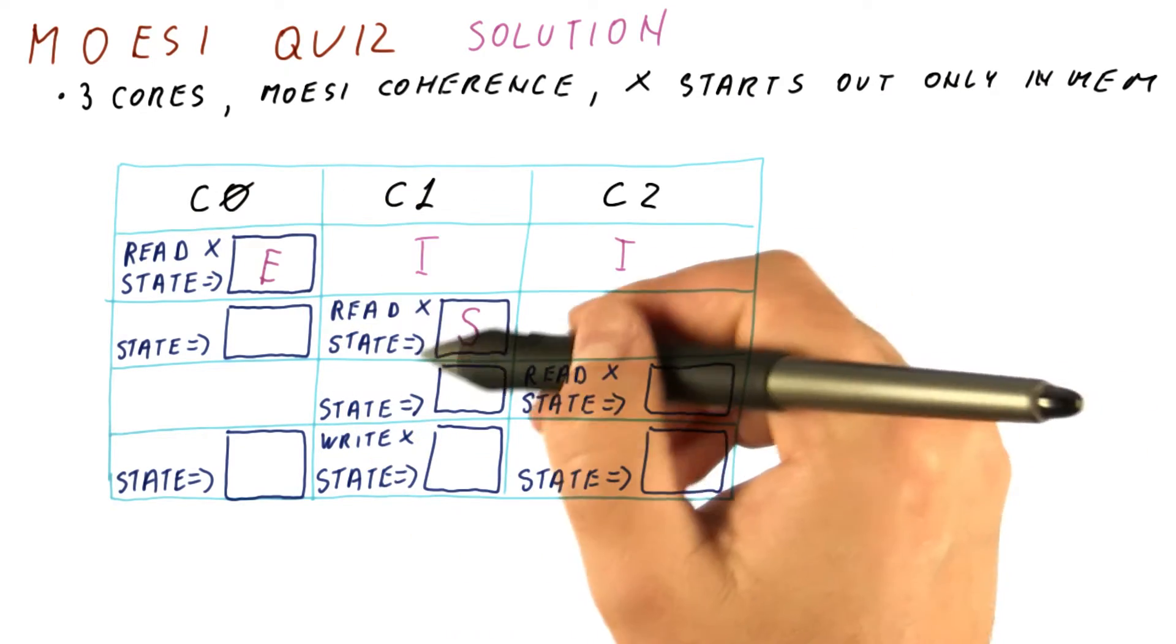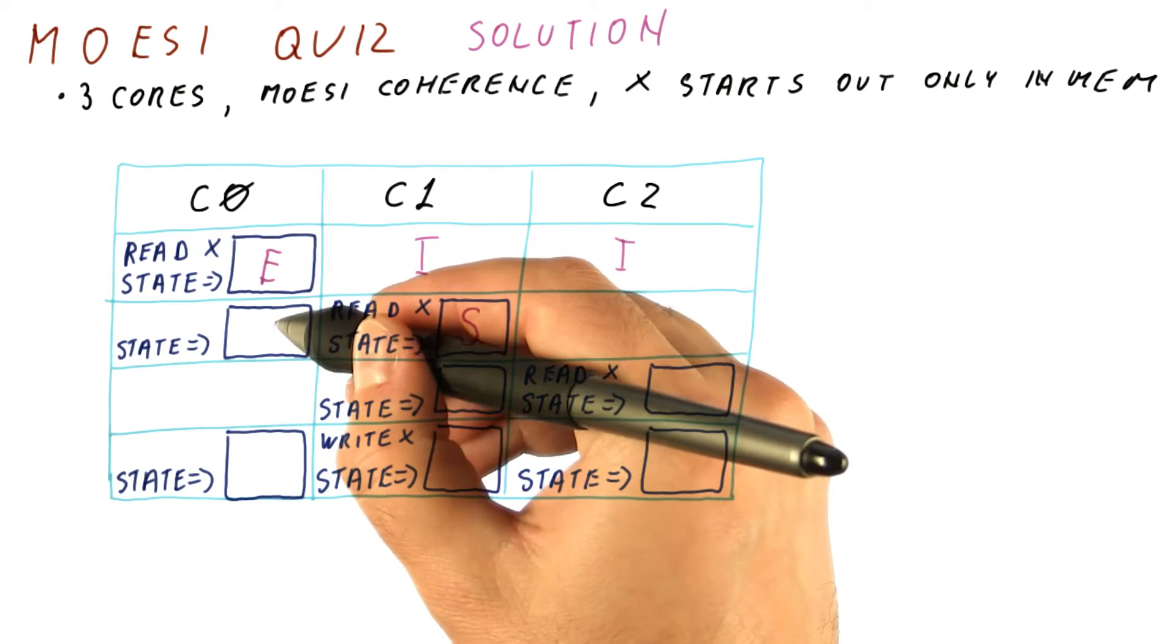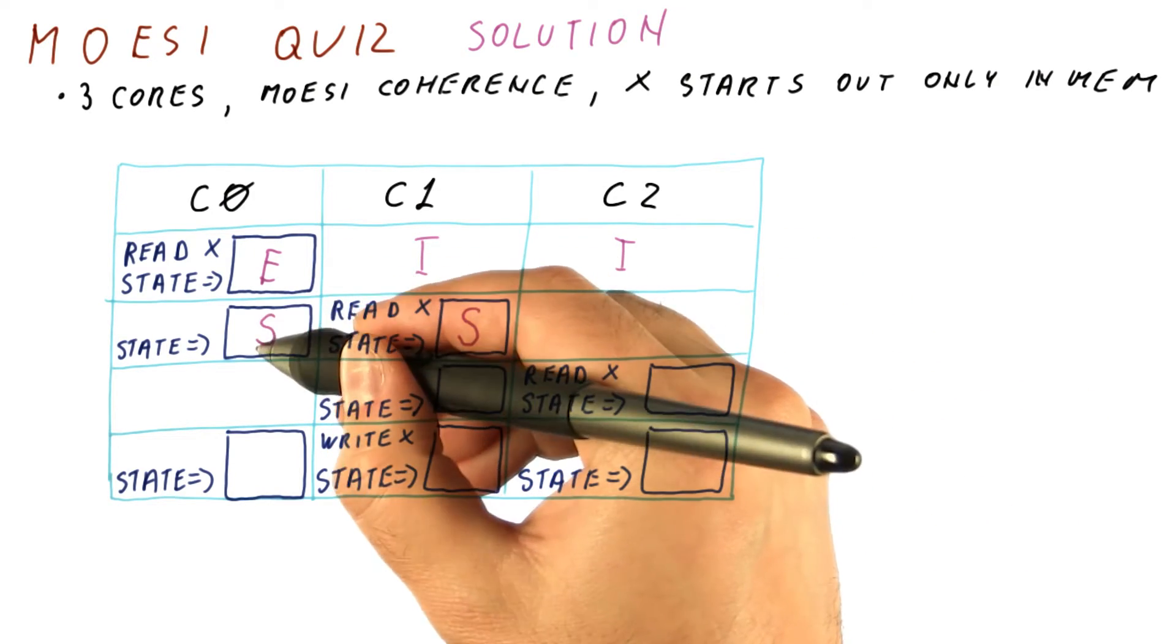Furthermore, C0 now snoops another reader, so it's no longer exclusive, and it moves to the shared state too.